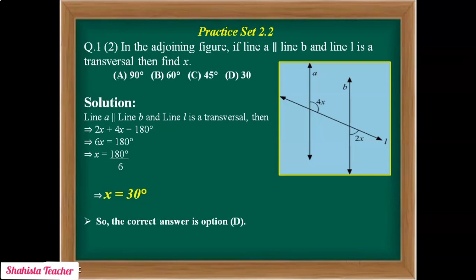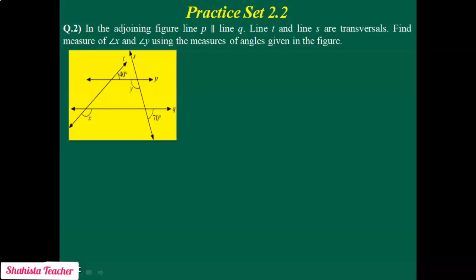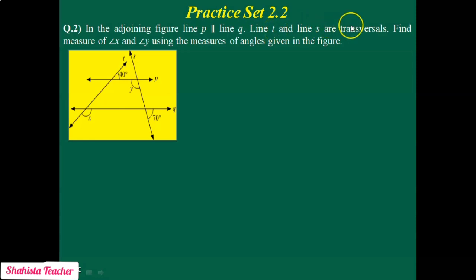Students, in this way we finish Practice Set 2.2, question number 1, sub-questions 1 and 2. Next we will solve question number 2 of this practice set. In question 2, line P is parallel to line Q. Lines T and S are transversal lines — previously we saw only one transversal, but now there are two parallel lines and two transversal lines. We need to find the measure of angles X and Y.